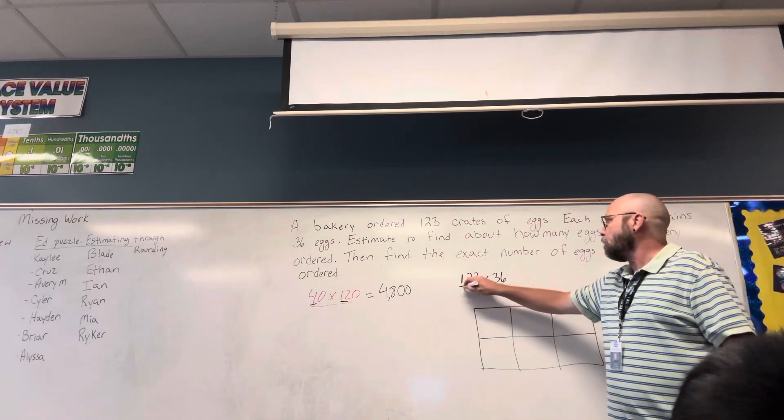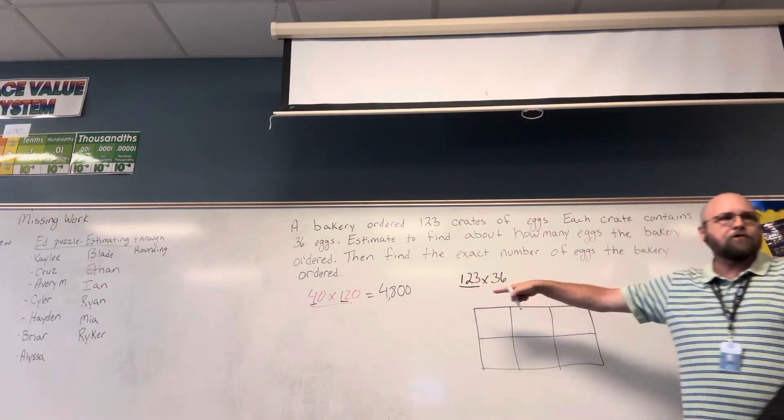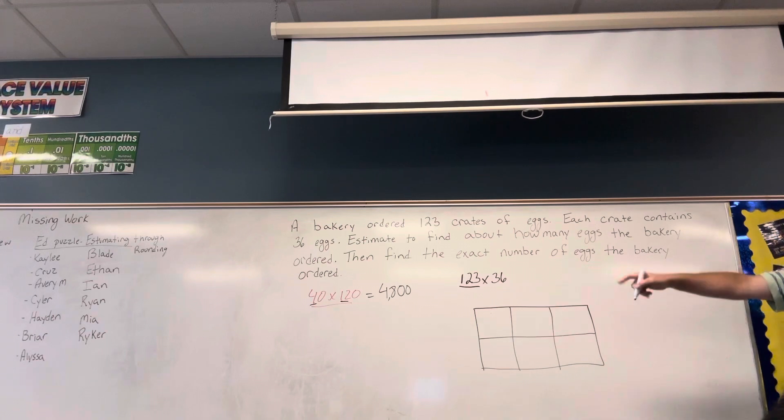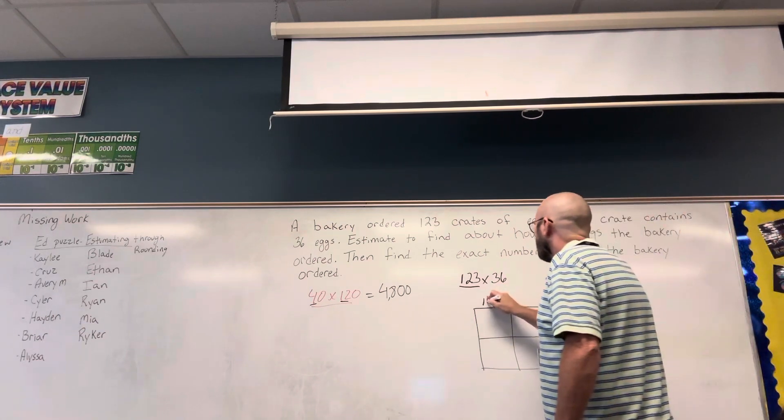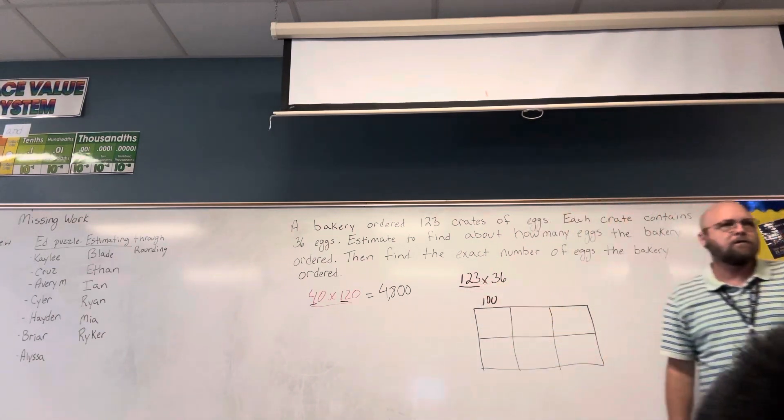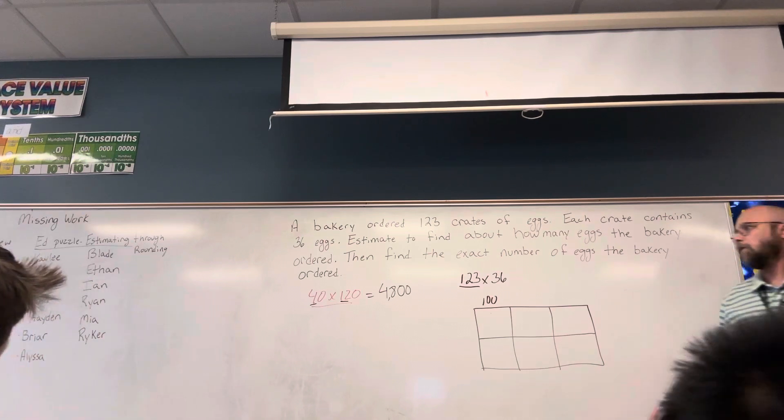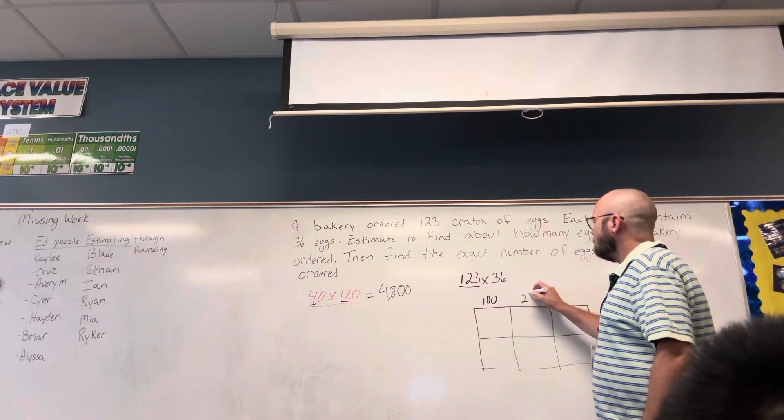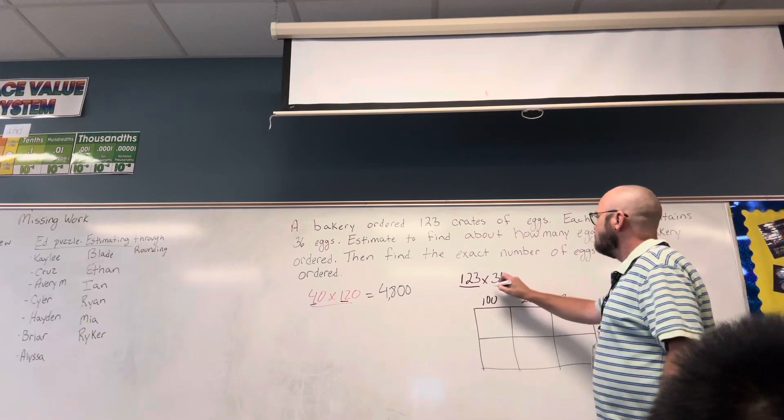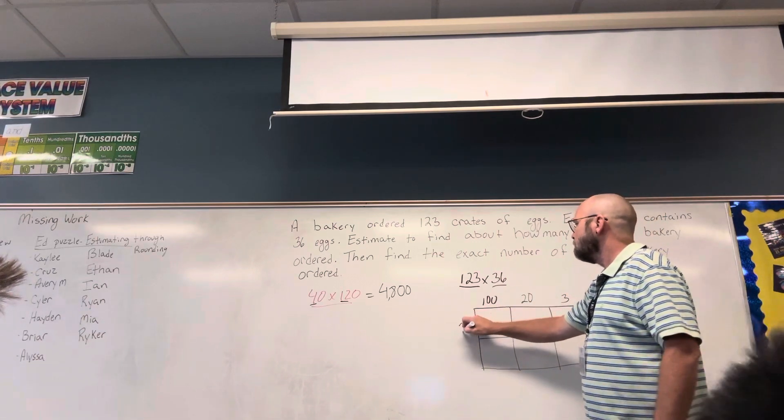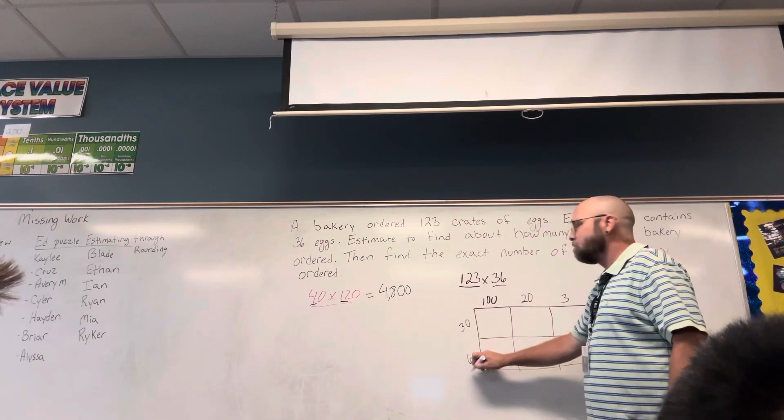So I'm going to take 123. How many hundreds do I have? 100. How many tens? 2. So that equals 20. And then three ones. Now I'm taking 36. I have 30 and 6. And we're multiplying.